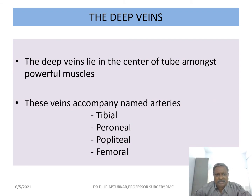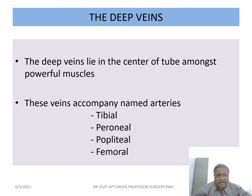Deep veins lie in the center of the tube among the powerful muscles. These veins accompany the named arteries — tibial, peroneal, popliteal, femoral. The anterior tibial, posterior tibial, and peroneal each have a pair of accompanying veins, giving at least six veins. All these join the popliteal vein, which then goes into the adductor canal as the femoral vein. These deep veins are liable for deep venous thrombosis and are called conduit veins.